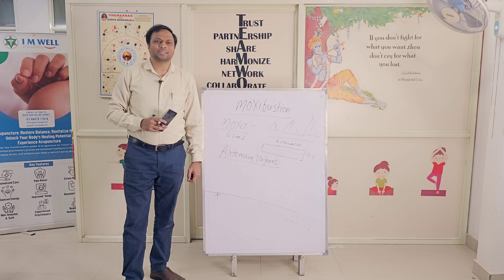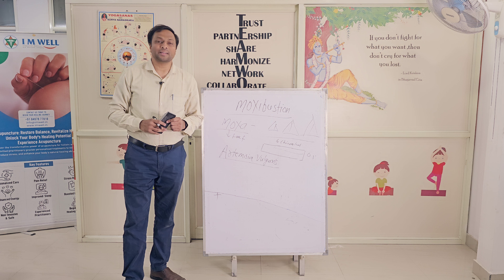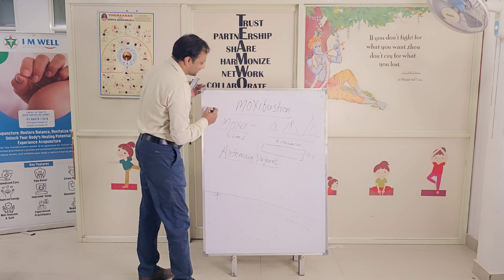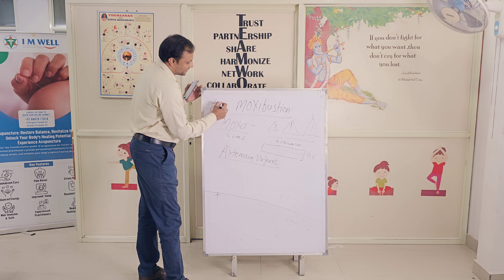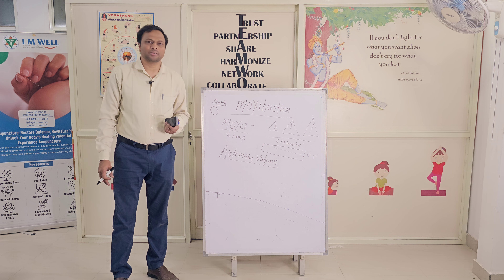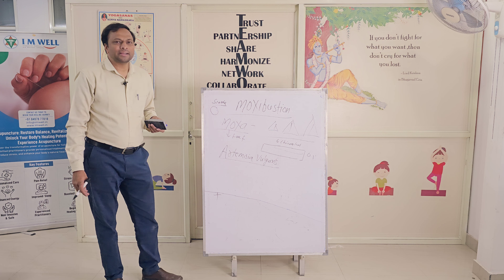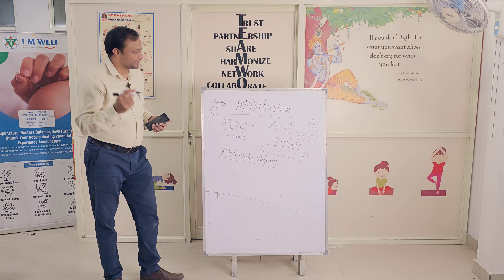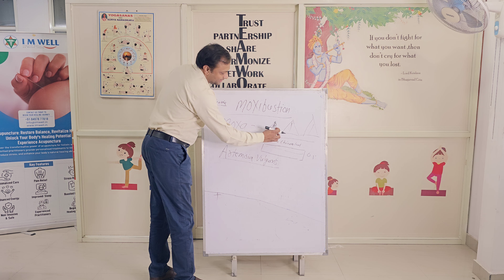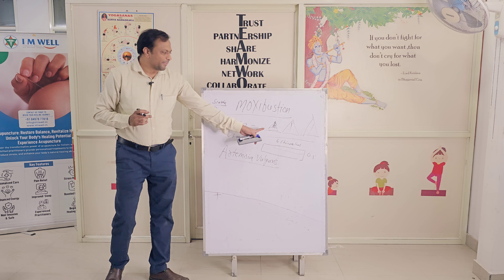Artemisia vulgaris is used in multiple ways: one is a direct moxa version and another is an indirect moxa version. In direct moxibustion there are two methods — one is scarring moxibustion, where the moxa cone or other forms of moxa are used directly on the skin until scarring occurs. Because of the scarring, this is not much used in modern therapies. The most commonly used method is non-scarring, where the cone of moxa is kept on the skin and allowed to burn.